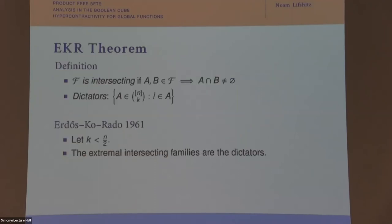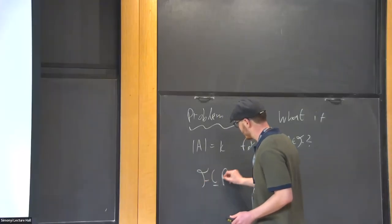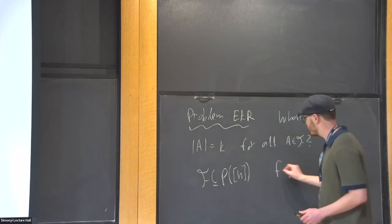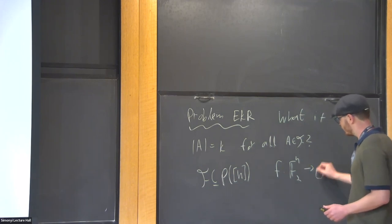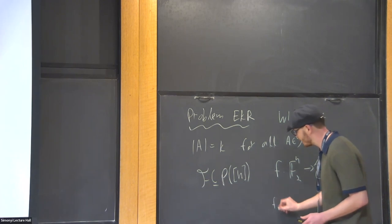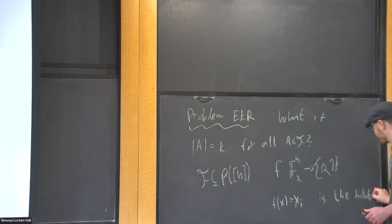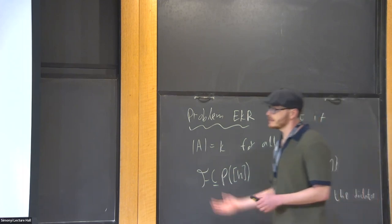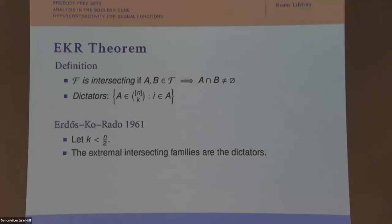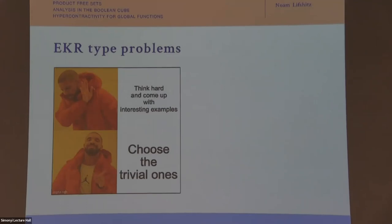What Erdős-Ko-Rado showed is that the dictators — families of sets corresponding to functions from {0,1}^n to {0,1} where f(x) = x_i — are called dictators. In the Boolean setting, a dictator corresponds to the family of all sets containing a given element. The extremal intersecting families are the dictators. The philosophy is that instead of trying to come up with interesting examples, the most trivial ones are actually extremal.